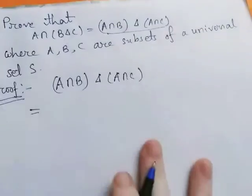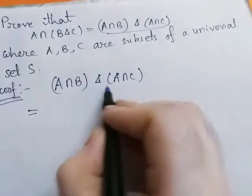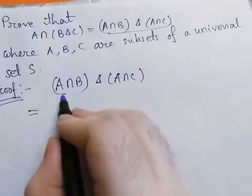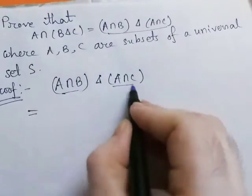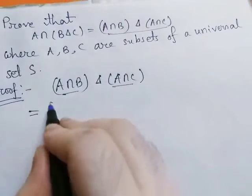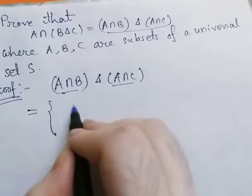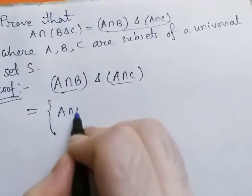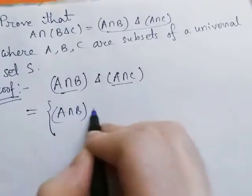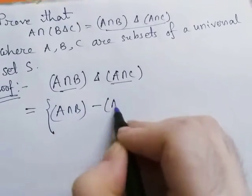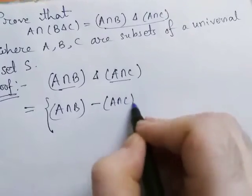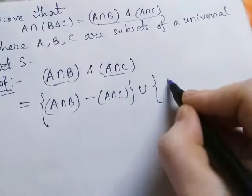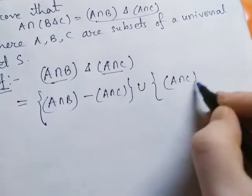Now this equals the symmetric difference of two sets. Suppose this is A, this is B. Then we can write this as A minus B union B minus A. So this will be A minus B union B minus A.